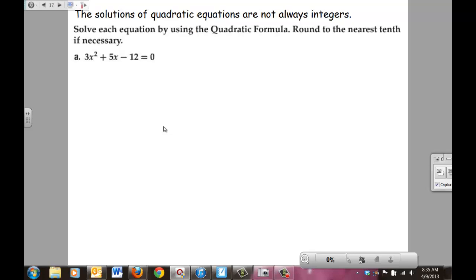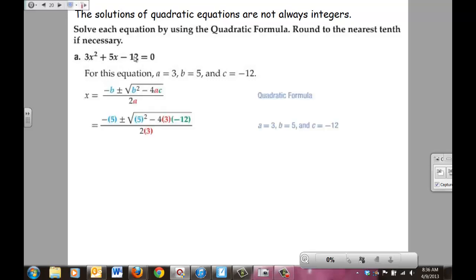Solve equations by using quadratic formula, round to the nearest tenth if necessary. This one's already in standard form, so we don't have to change it. We're going to say for this equation, your a value is 3, your b value is 5, your c value is -12. Write your formula, substitute your values in, and you can see everything's color-coded to make it easier for you to see what they did.